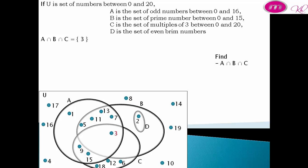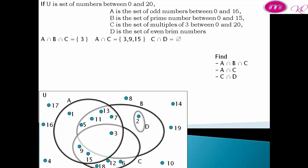A intersect B intersect C equals {3}. A intersect C equals {3, 9, 15}. C intersect D equals phi.